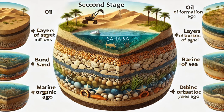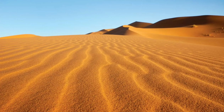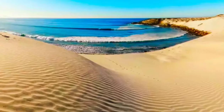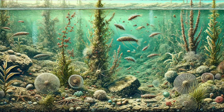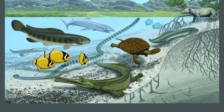Step 1: Accumulation of Organic Matter. Millions of years ago, the Sahara wasn't a desert. It was covered by oceans, rich with marine plants, plankton, and small animals. When these organisms died, they settled on the seabed, creating a thick layer of organic matter.